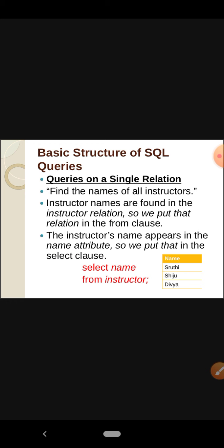Let's see an example for queries on a single relation. The first example: find the names of all instructors. The instructor names are found in the instructor relation, so we put that relation in the FROM clause. The instructor's name appears in the name attribute, so we put that in the SELECT clause.